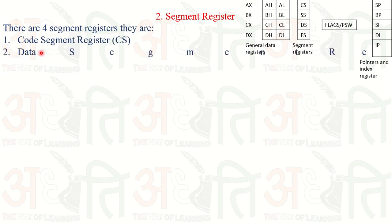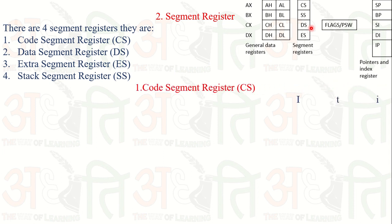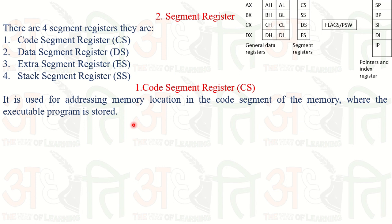The four segment registers are: Code Segment register (CS), Data Segment register (DS), Extra Segment register (ES), and Stack Segment register (SS). The Code Segment register CS is used for addressing memory locations in the code segment of the memory. The code segment is used to address the memory location where the executable program is stored.